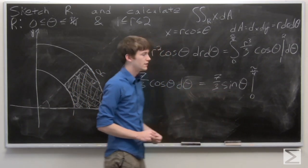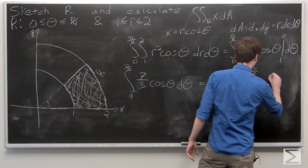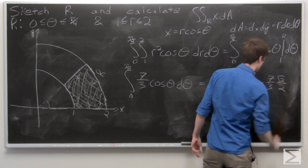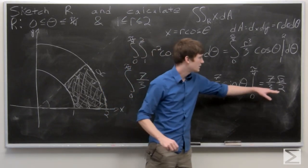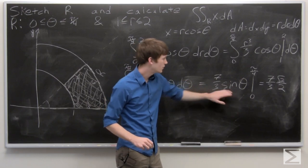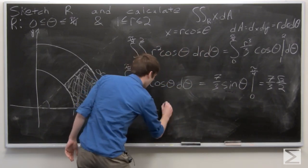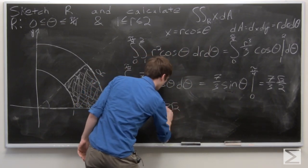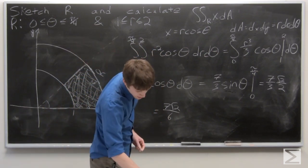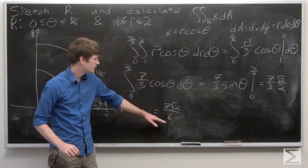Sine of pi over 4 is square root 2 over 2. So we get 7 thirds times square root 2 over 2 minus sine of 0, which is 0. So we can simplify this and we get 7 square root 2 over 6. And that's our result.